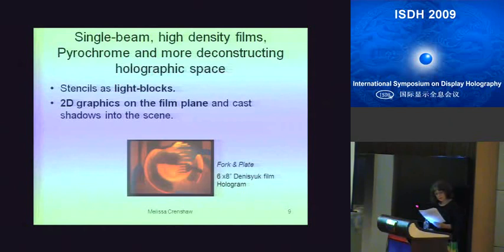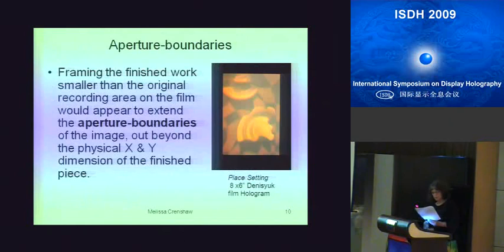Theme-oriented works predominated for me during this time. In the series Place Settings, I incorporated what I ended up calling light blocks — fork-shaped stencils placed on the surface of the film, blocking the reference and object beam. This created 2D graphics on the film plane and also cast shadows into the scene. By framing finished work smaller than the original recording area, the scene would appear to extend under the frame and beyond the physical dimension of the finished piece. This is when I began to utilize and explore the possibilities of the aperture boundaries of holograms.